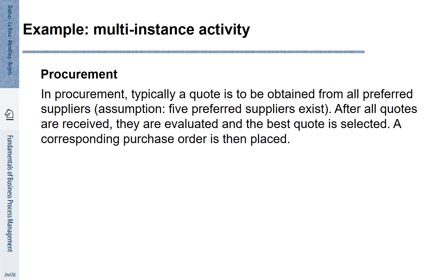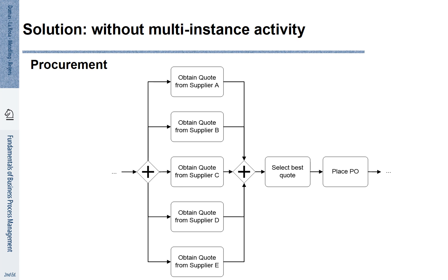So far we have looked at examples where repetition is done in a sequential way. There are also other examples. Have a look at this procurement process. In procurement, a quote is to be obtained from all preferred suppliers. Let's assume we have five preferred suppliers. After all quotes are received, they are evaluated and the best quote is selected. The corresponding purchase order is then placed. It is possible to represent this behavior using AND split and join gateways. Potentially, we could represent that after the AND split, we in parallel obtain quotes from suppliers A, B, C, D, and E.